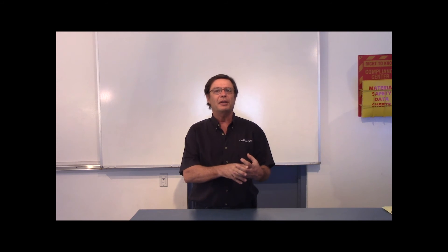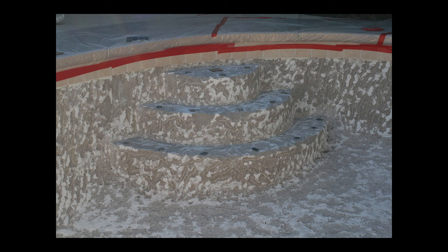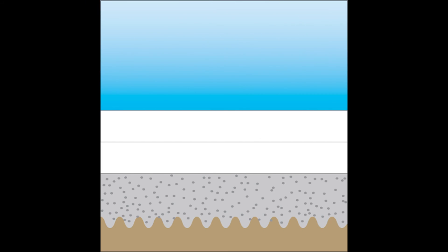Bonding plaster to new gunite is rarely a problem because there's a chemical bond where the curing plaster chemically locks into the curing gunite, in addition to a mechanical bond where the fresh plaster physically keys into the intentionally rough and porous surface of fresh gunite. It's new plaster to old plaster or new plaster to old gunite that are more difficult combinations, because in these situations no chemical bonding is likely — the old plaster or gunite is already thoroughly hydrated, chemically reacted, and relatively inert. This has given birth to companies manufacturing and distributing bonding aids that can be applied to the old surface to help hold on to the new plaster.